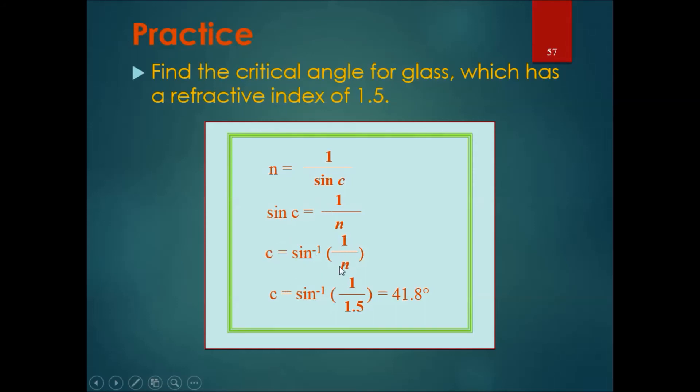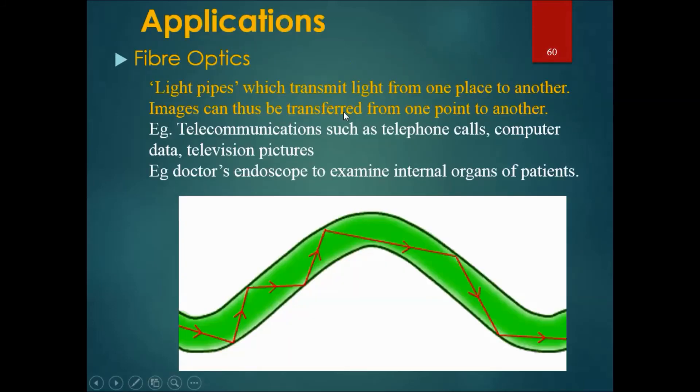Substituting 1.5 into N, C equals to inverse sin of 1 over 1.5, which we can solve to be 41.8 degrees.